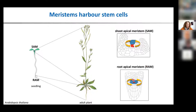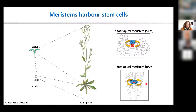I will focus later more on the root apical meristem. Here we also have stem cells in blue. The stem cells are surrounding the organizing cells of the quiescent center, shown in red, but homeostasis has to take place here as well. The quiescent center cells organize the stem cells.